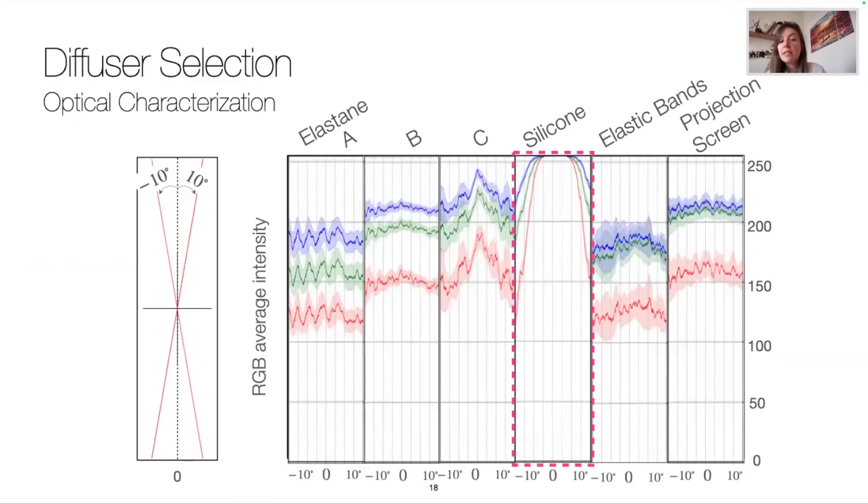So we note that, for instance, for the silicone, the average intensity is saturated at the center due to the reflection of the light. But for the rest of the samples, results are quite constant, and more especially, the elastic band's dark line does not seem to impact the RGB intensities with results similar to the traditional projection screen.